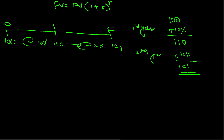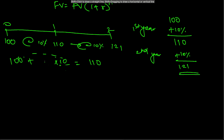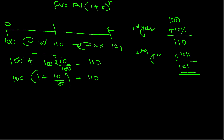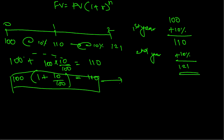How do I prove this with the formula? From 100 I am getting 10 percent, so 100 into 10 percent equals 110. I will take the common factor out, so what I get is 100 into 1 plus 10 by 100 is equal to 110. I will keep this as Equation 1.